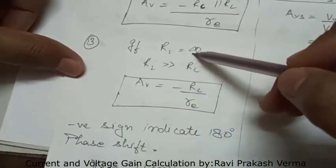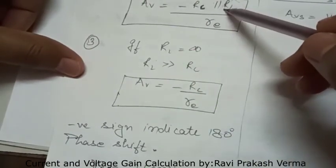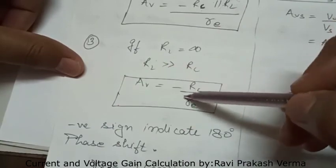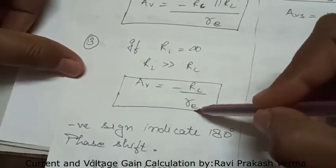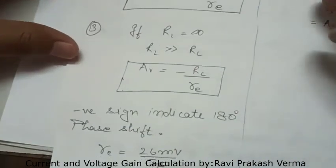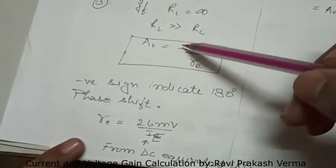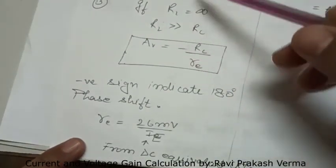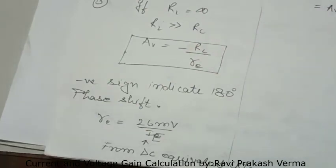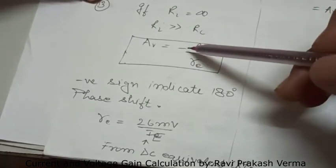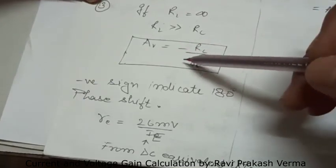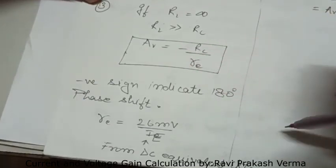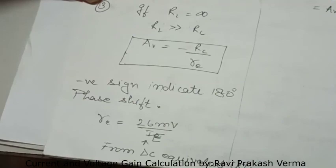In the next case, if RL is infinite, putting RL equals infinity into the above equation gives minus RC divided by RE. One important thing to notice: the negative sign in the voltage gain indicates that in common emitter configuration the output is 180 degrees out of phase with respect to the input. This negative sign shows the 180 degree phase shift.